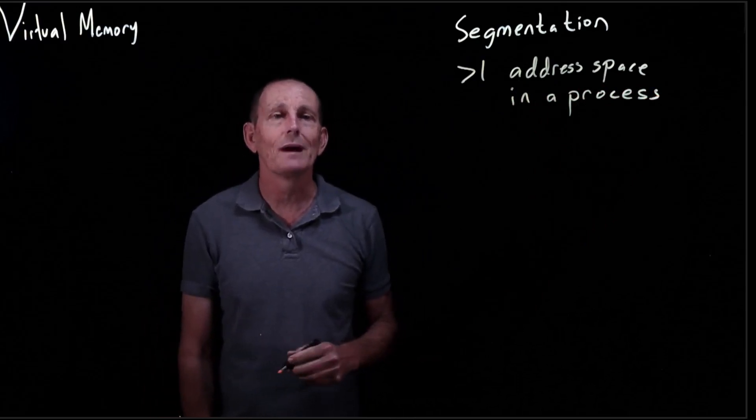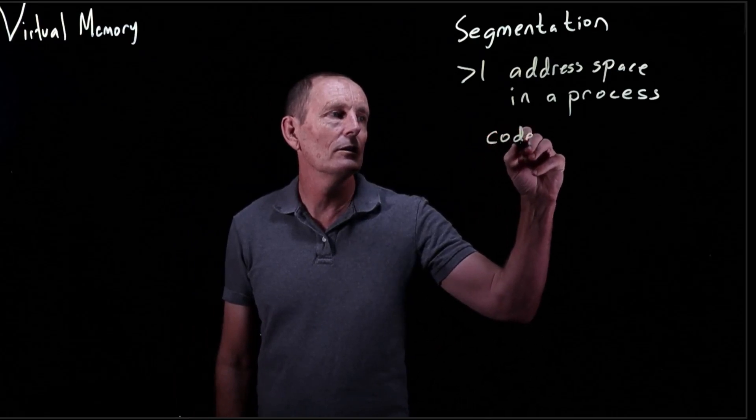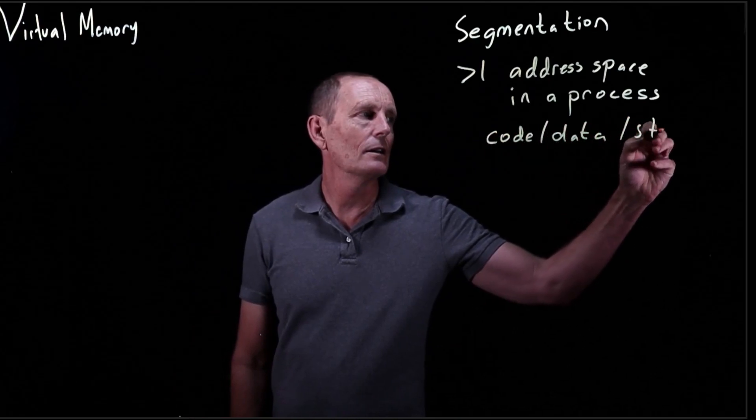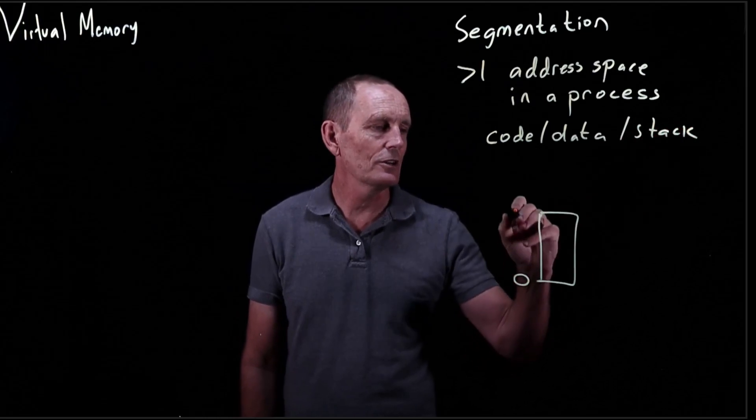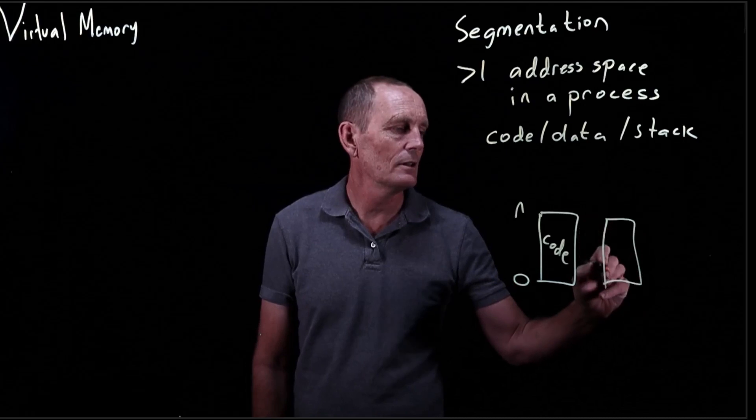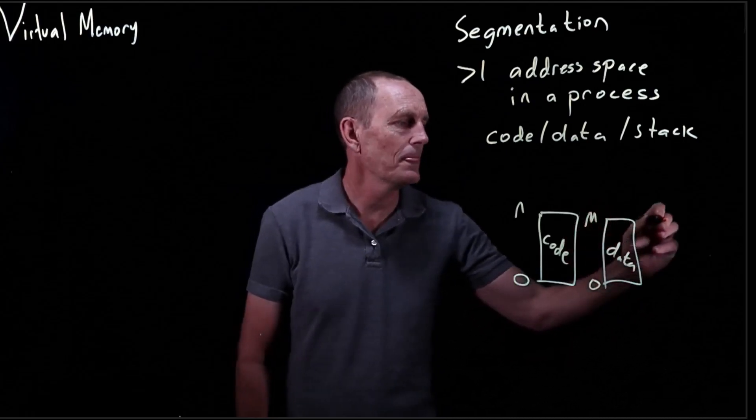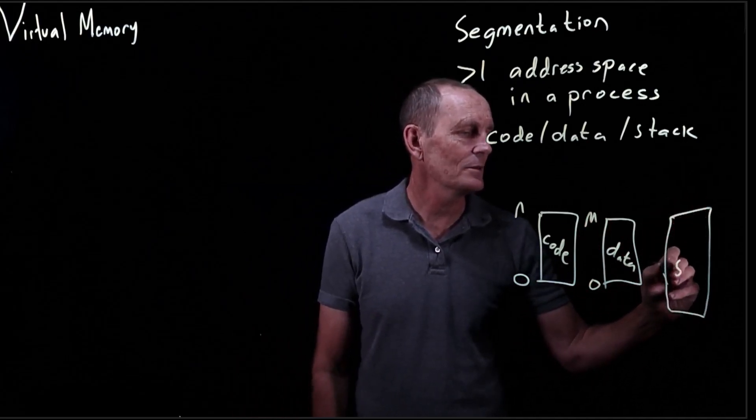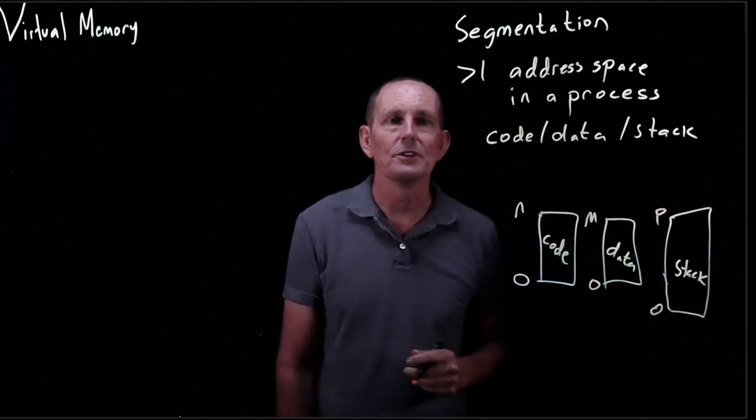In particular, we often might have one address space for the code, another for data, and a third for stack. Our code starts from say 0 to n, our data may be from 0 to m, and our stack from 0 to p - these are different sizes possibly.